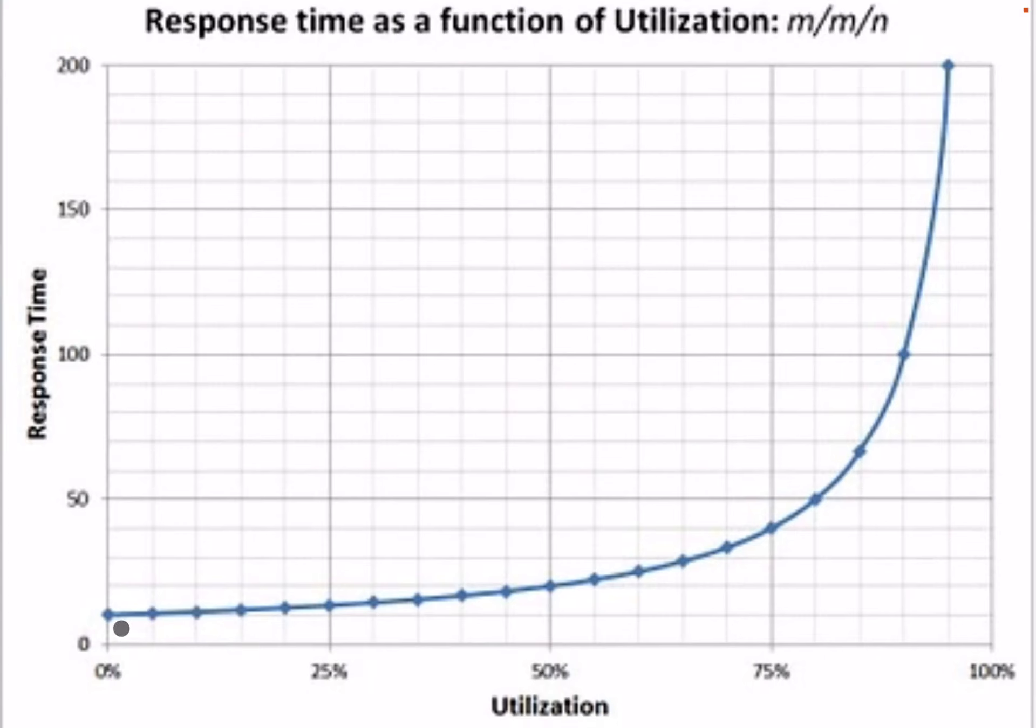As utilization increases, response time increases. For a long time the difference is small, say until 75% or 80%. Even if your utilization increases, response time changes only a little. But once you cross this threshold, the graph becomes exponential.